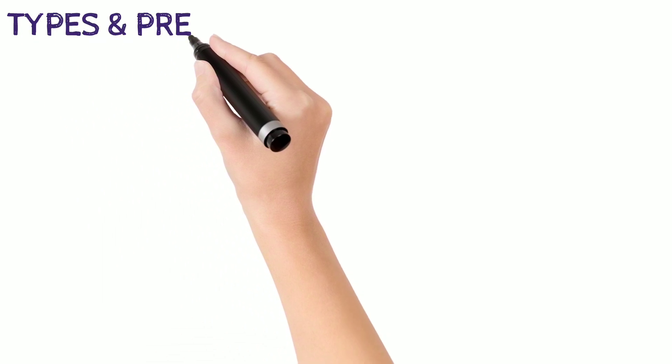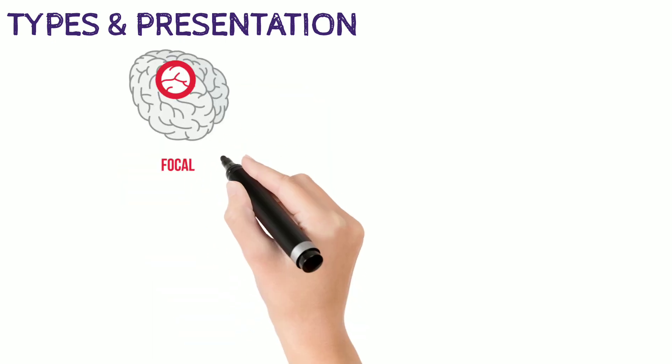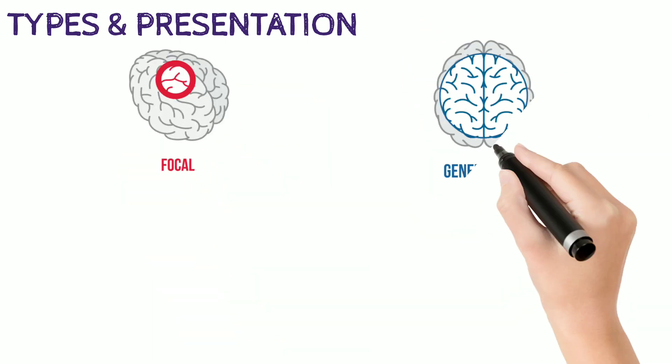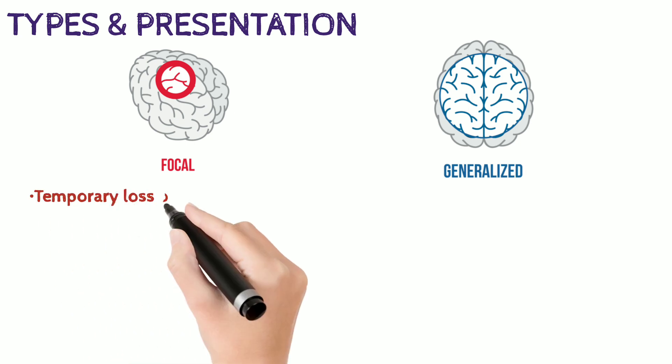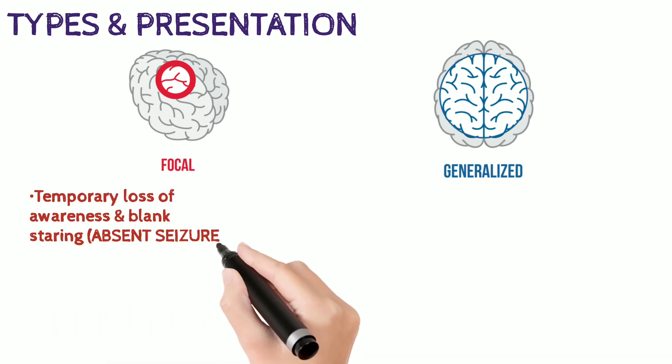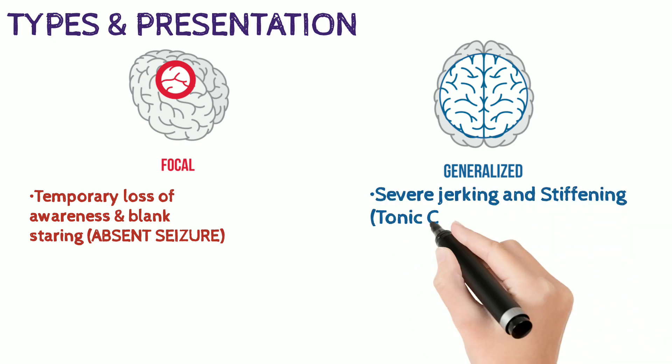Broadly speaking, the presentation of epilepsy can be because of two kinds of conditions: one in which a specific part of the brain is involved, and the other in which a large portion is involved. Because of which epilepsy has a wide variety of symptoms ranging from temporary loss of awareness to complications like severe jerking and body stiffening.